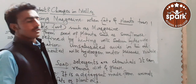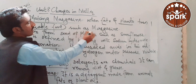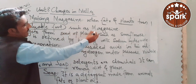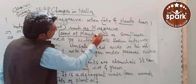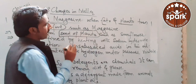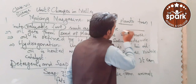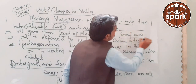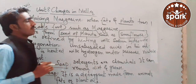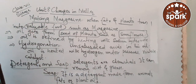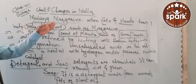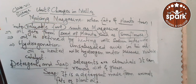Oil is obtained from seeds of plants such as sunflower. From sunflower — suraj mukhi — we extract oil, which helps in making margarine. We can get oil from the seeds of plants such as sunflower, and from that oil we extract what is needed to make margarine.